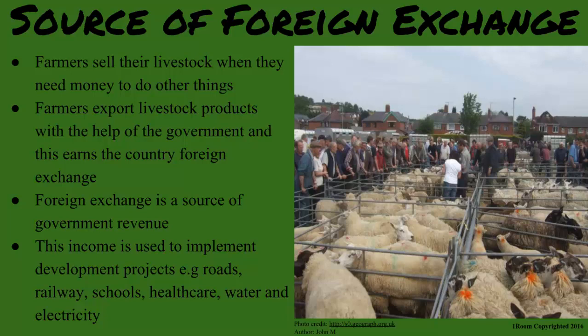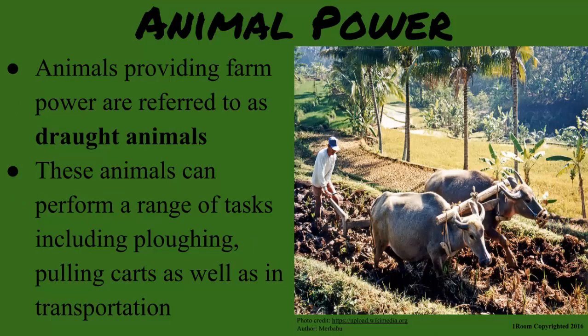Now back to how farm animals are of benefit. We normally use our bulls to pull the plows during cultivation. Our neighbor has donkeys that she uses to draw water from the river, which she sells in the neighborhood. And we sometimes hire her services during harvesting to transport our harvest from the farm. It is known as animal power, and the farm animals that can do that are referred to as draft animals. These animals can perform a range of tasks including plowing, pulling carts, as well as transportation.